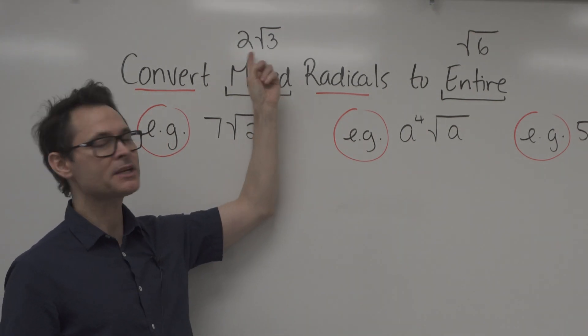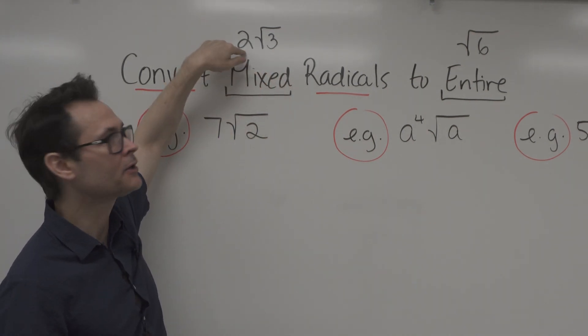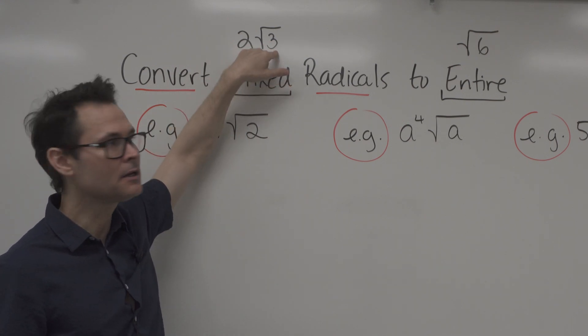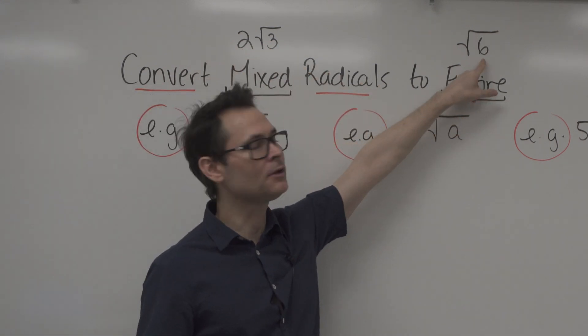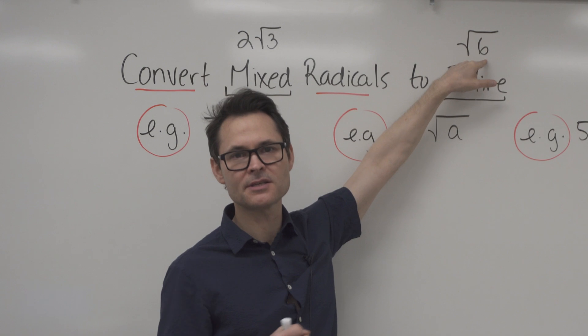Just making sure we know mixed form means we have a number on the outside of the radical and also a number on the inside. And entire means all of the number is entirely inside the radical.